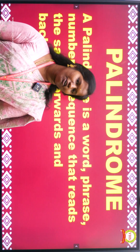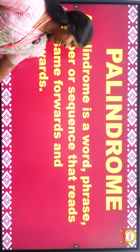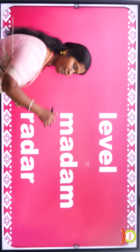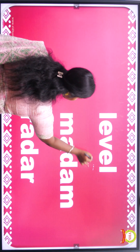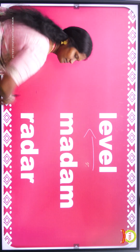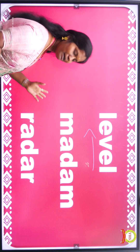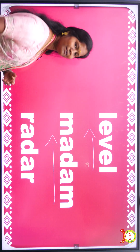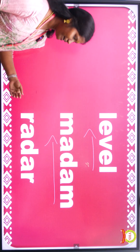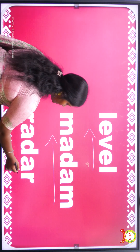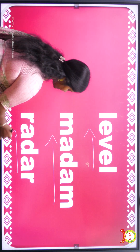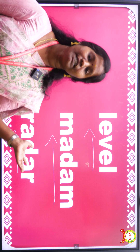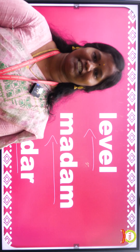Let's see some examples of palindrome words. Level — now read it backward: level. Madam — madam. Radar — now read it backward: radar. These are the same backwards and forwards.